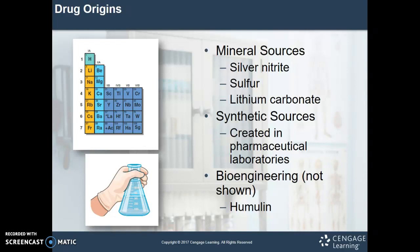Bioengineering: genetic engineering is the latest process used to manufacture drugs. All living structures have the same DNA molecular structure consisting of six basic components — a phosphate, a sugar, and four bases. Recombinant technology takes genetic information from two different organisms and combines them. For example, by removing the bacterial walls of an E. coli bacterium and combining it with the insulin gene, the drug humulin — a type of human insulin — is made.